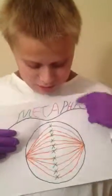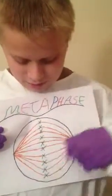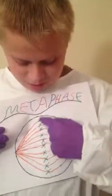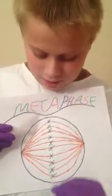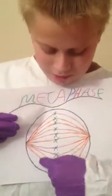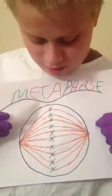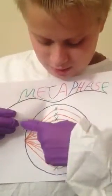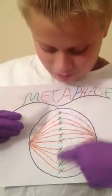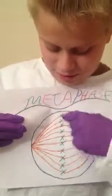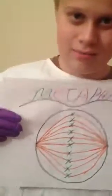Next is metaphase. The chromosomes, or the DNA, form X shapes and go into the middle. The spindle fibers go through each X, and the X shapes form like a bridge through the middle of the cell. The cell is still in its globular shape.